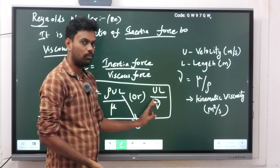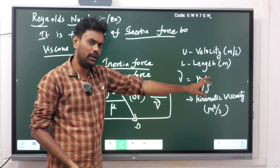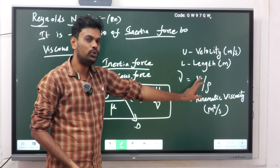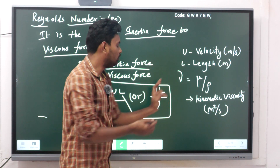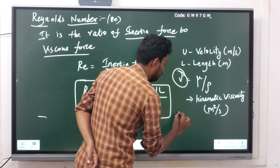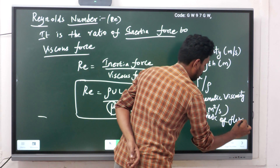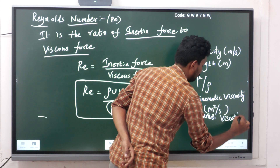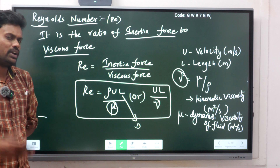The parameter u is the velocity of the fluid in meters per second. l is the length of the plate over which the fluid flows. ν (nu) is the kinematic viscosity, defined as μ / ρ, which simplifies the formula. μ (mu) is the dynamic viscosity of the fluid, with units of meter squared per second.